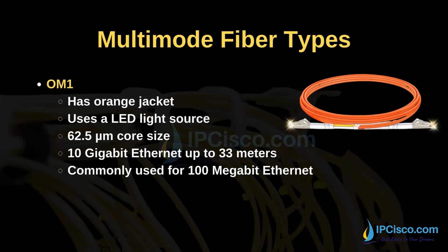OM1 has an orange jacket. It uses an LED light source. The size of the core is 62.5 micrometers. OM1 supports 10 gigabit ethernet up to 33 meters. It is commonly used for 100 megabit ethernet.